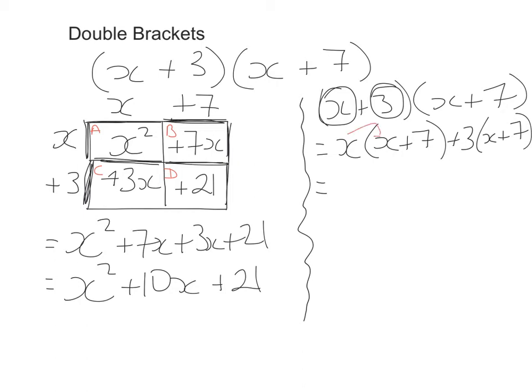So I'm going to do x by x, and x by plus 7. That's going to give me x squared plus 7x. And then my other example is going to be 3 times x, and 3 times 7. So that's going to give me plus 3x plus 21. And what do you notice? We get the same answer.